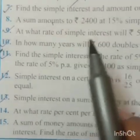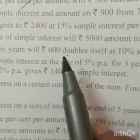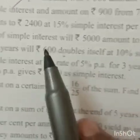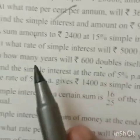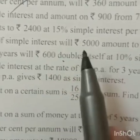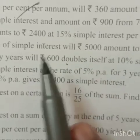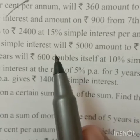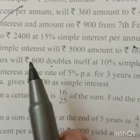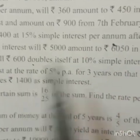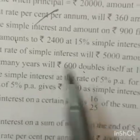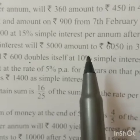Question number 10: In how many years will Rs. 600 double itself at 10% simple interest? Rate is 10%, principle is 600. The amount is hidden. You have to find the amount. Principle 600 is doubling, meaning multiply by 2: 600 into 2 equals 1200. So 1200 is the amount. When will 600 become 1200 at rate 10%?